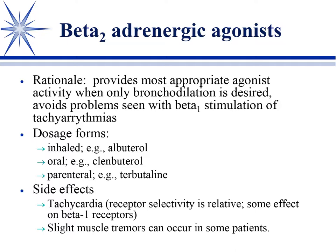Obviously the fewest side effects are seen with inhaled beta-2 agents - it works really well with relatively few side effects. We're more likely to see side effects with terbutaline because it's the least beta-2 selective of the group - it does spill over to beta-1 a little. At higher doses or in susceptible animals you can see tachycardia, and muscle tremors from the beta-2 effects can sometimes occur. But normally they're pretty well tolerated and the majority of animals don't have any side effects.